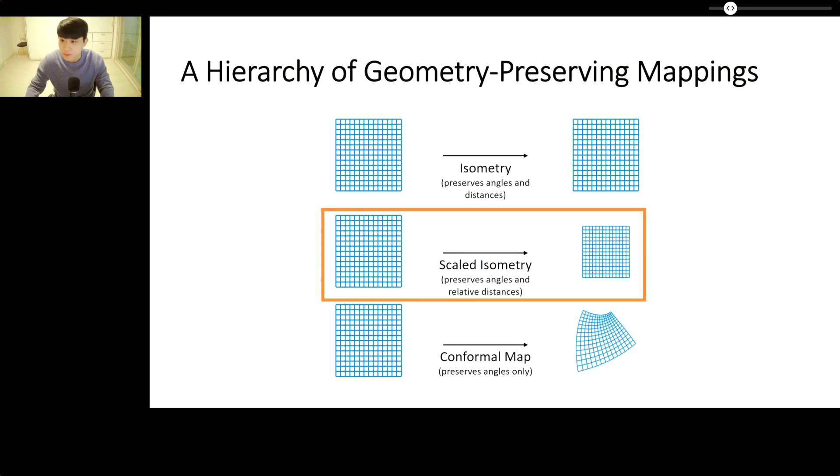In our work, we have found that using a measure of distance from a scaled isometry seems to offer the best balance between manifold learning accuracy and model parsimony.